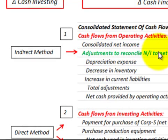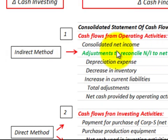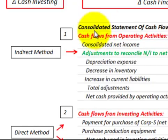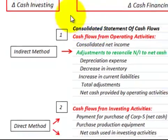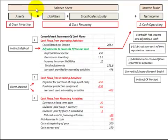We start with our net income and adjust it for any changes in cash. So first, let's look at what these cash flows for each activity would encompass on our balance sheet and our income statement.